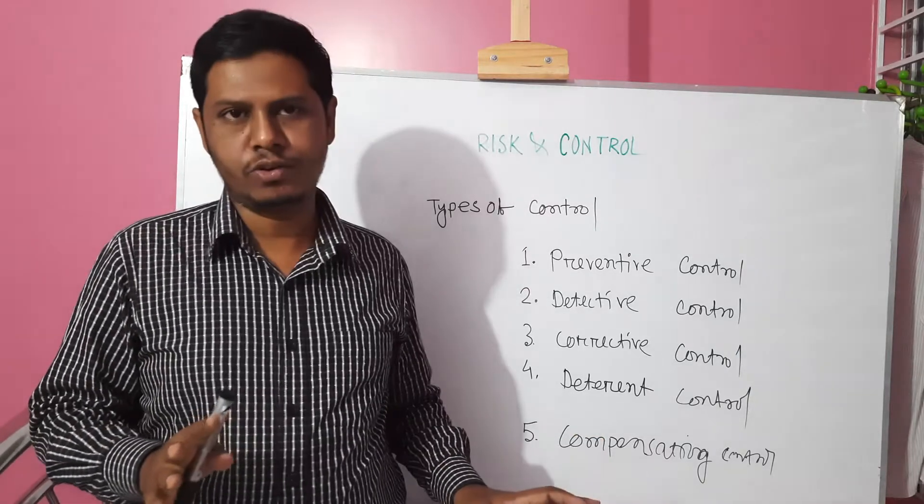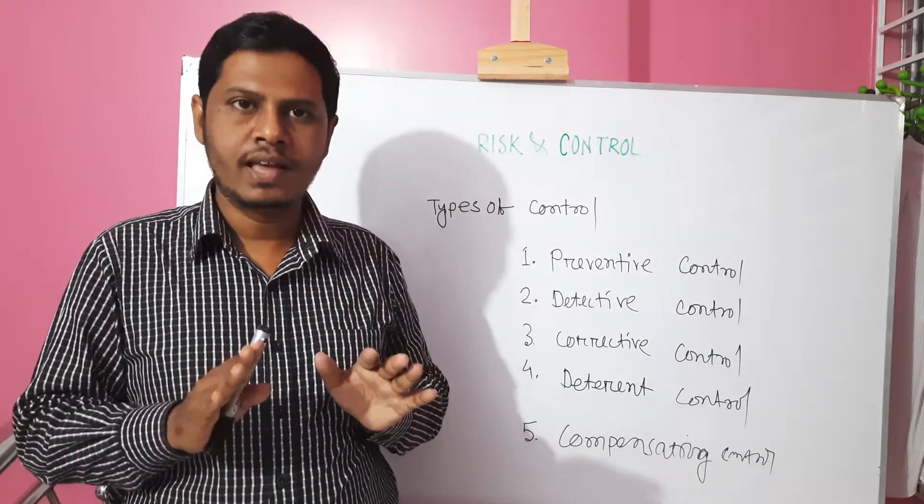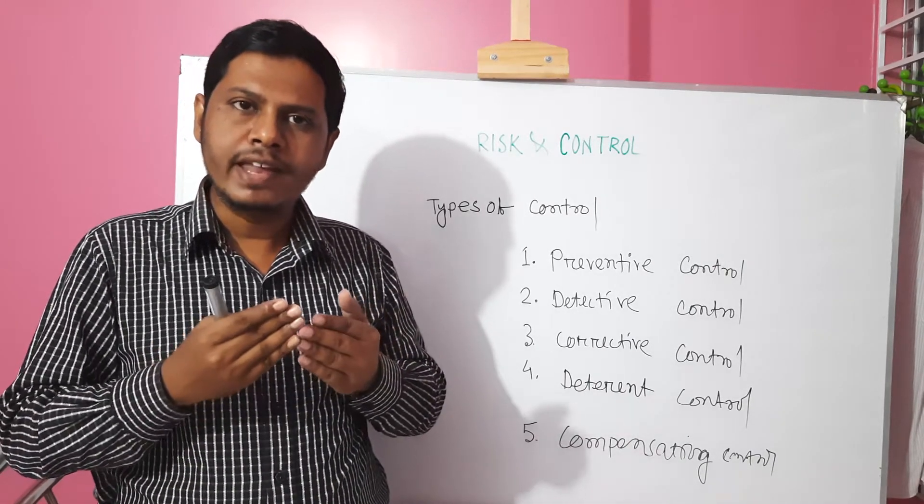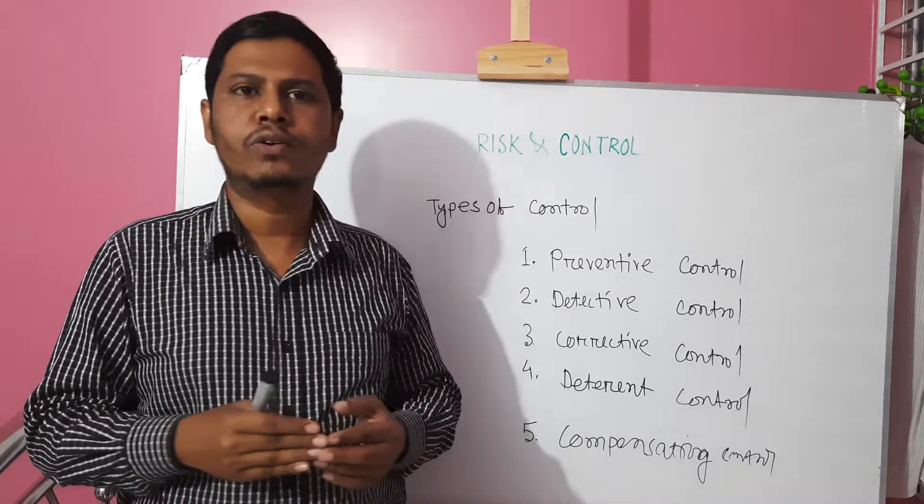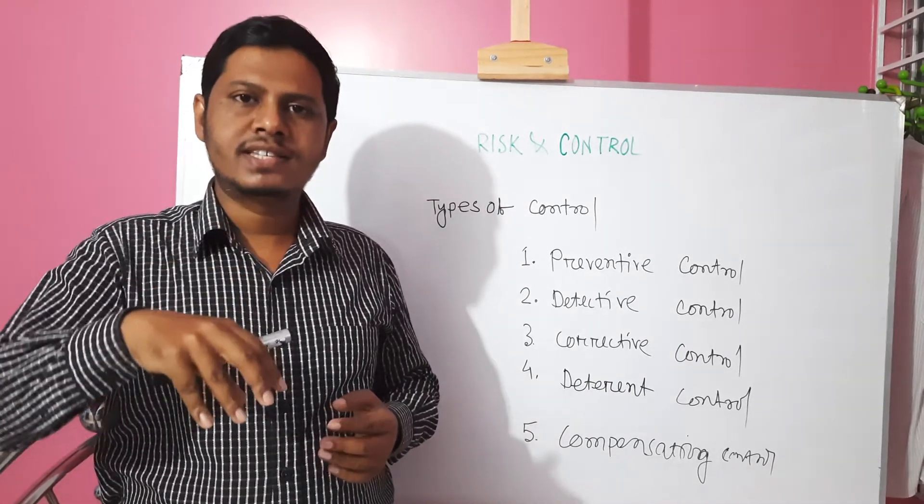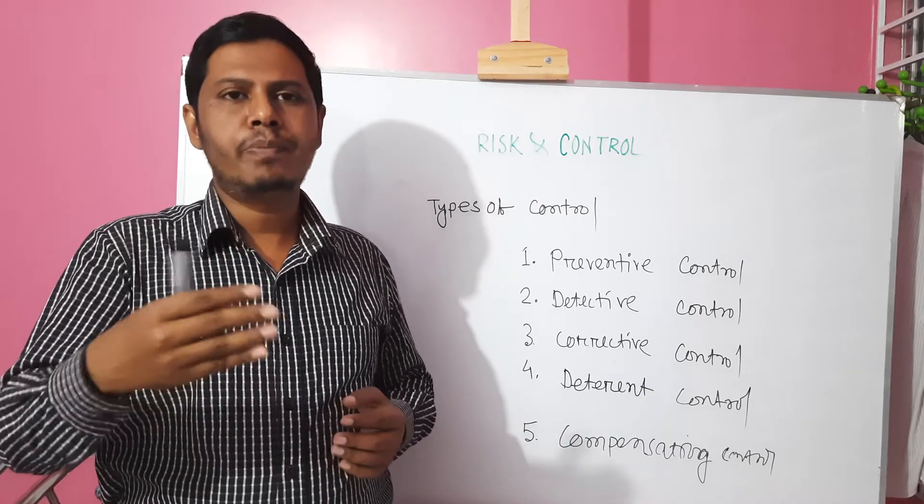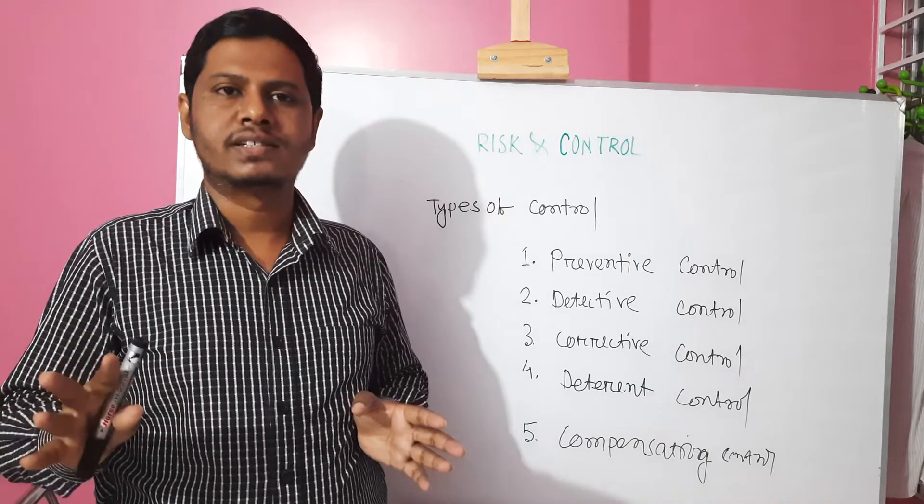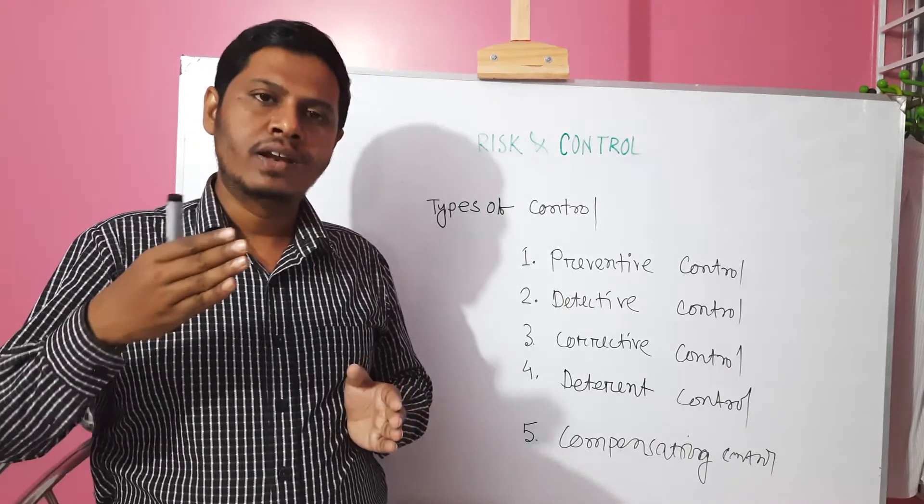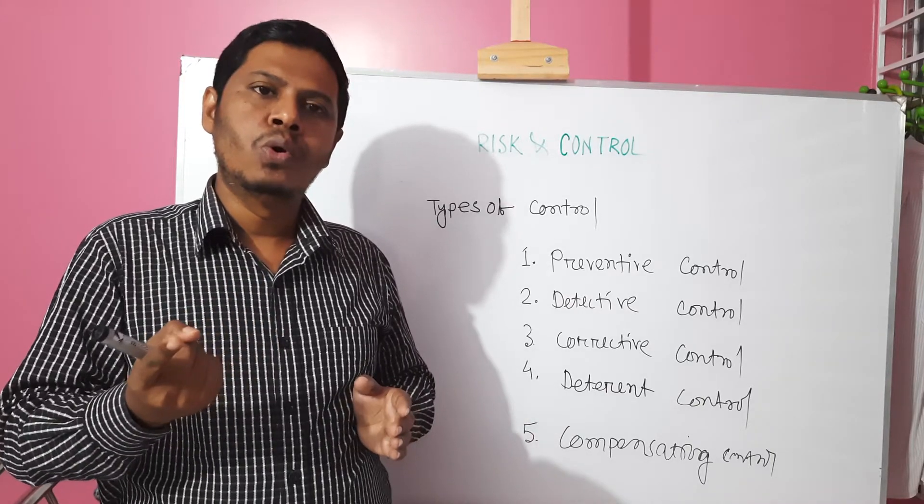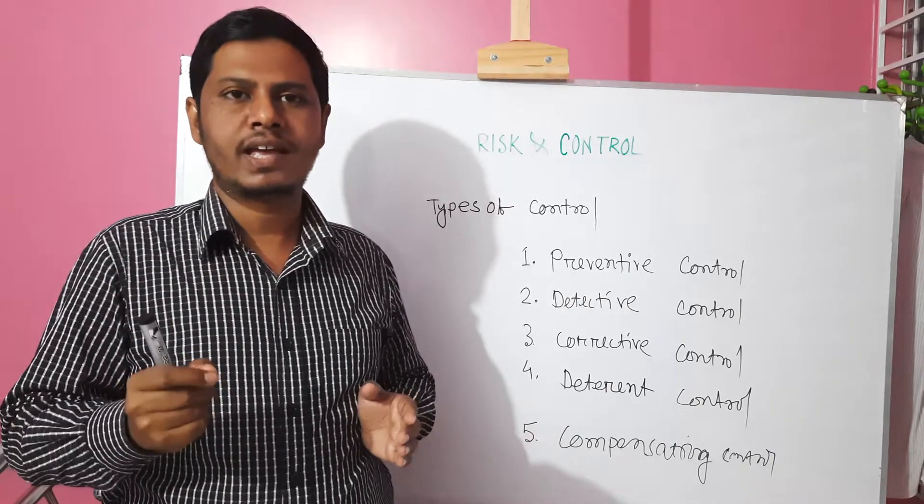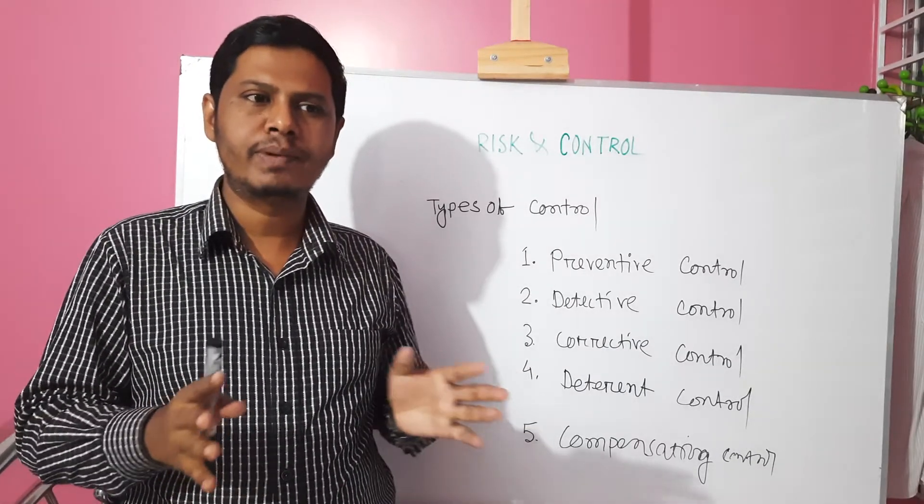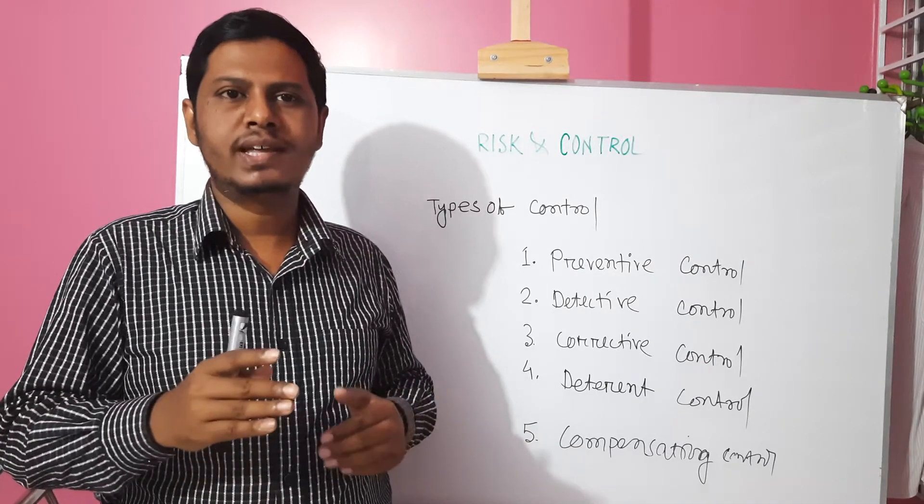And finally, compensating control. If there is any weakness after implementing the control, the system has any weakness, then we implement the compensating control. Say, in a banking system, one user receives the cash and another user pays the cash. But if there is only one person who performs both activities, cash received and cash payment, for this purpose we implement the compensating control. We set up lots of mechanisms, we set the log monitoring.